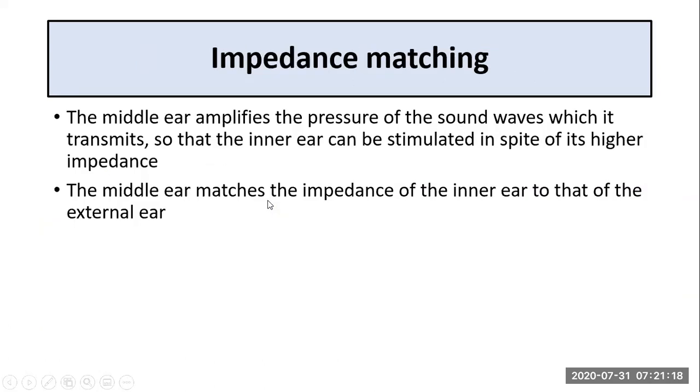The middle ear acts as an impedance matching device. It amplifies the pressure of the sound waves which it transmits, so that the inner ear can be stimulated in spite of its higher impedance. This is called impedance matching. The middle ear matches the impedance of the inner ear to that of the external ear. The impedance mismatching is mostly compensated by the middle ear by increasing the sound pressure by about 34 decibels. This is accomplished by three mechanisms.